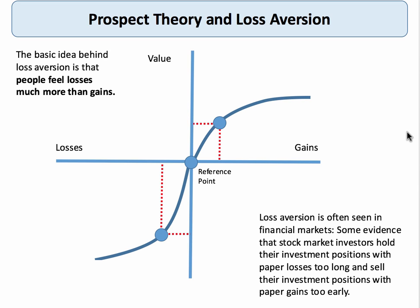We find loss aversion in financial markets. When holding a stock or share that is making a loss, people will typically not sell it because they want to avoid realizing the loss. They may expect the share price to turn around, but they tend to hold on to paper losses for too long. Similarly, people hold on to a loss-making house when the market is falling, instead of cutting their losses and moving on. They also tend to sell their gains too early to realize a gain quickly and avoid potential future loss.